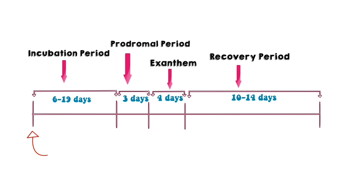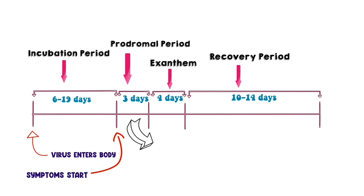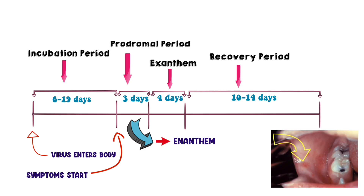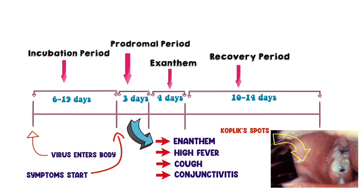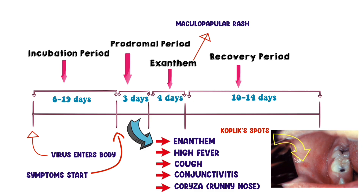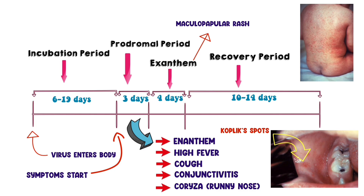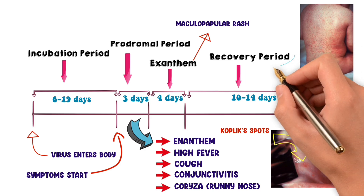The measles virus enters the body, and then symptoms begin. The prodromal period comprises the enanthem — Koplik spots — high-grade fever, and the three C's: cough, conjunctivitis, and coryza. This is followed by the exanthem, which is a rash outside of the mucous membrane seen as a maculopapular rash in measles, and then ultimately the recovery period.